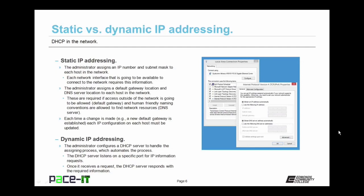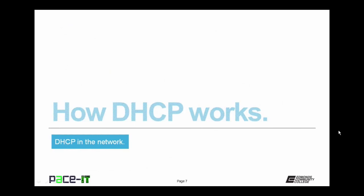With dynamic IP addressing, the administrator configures a DHCP server to handle the assignment process, which automates the process and eases management. The DHCP server listens on a specific port for IP information requests, and once it receives a request, it responds with the required information. Now let's move on to how DHCP works.